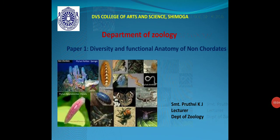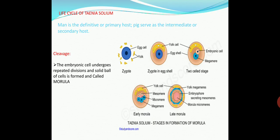Good morning, dear students. This is the continued part of phylum Platyhelminthes. In the last video you studied the morphological structure of Taenia solium or tapeworm, and in this video you are studying the life cycle of Taenia solium. The life history of Taenia solium is complicated and digenetic, consisting of two hosts: the primary or definitive host, which is man, and the secondary or intermediate host, which is the pig.